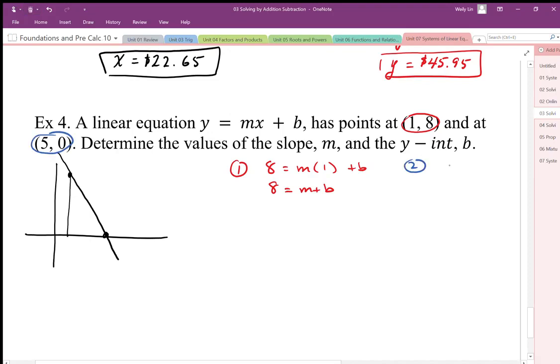So my other coordinate there of 5 and 0 generates a second equation, that's 0 equals 5m plus b. This is a system of equations.